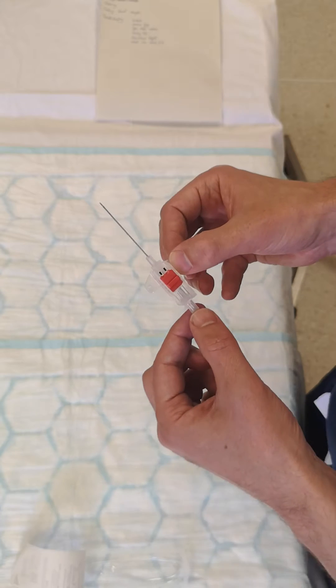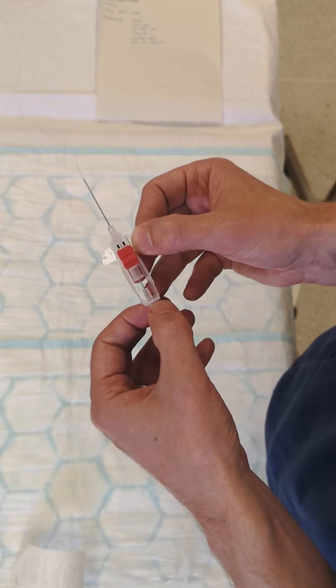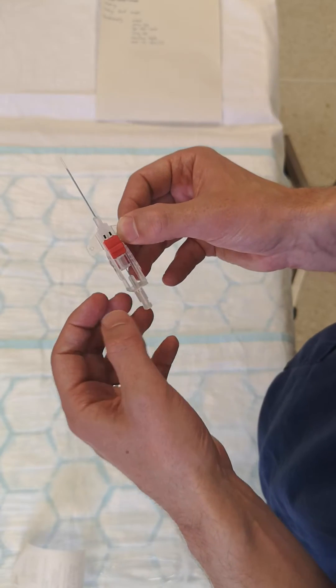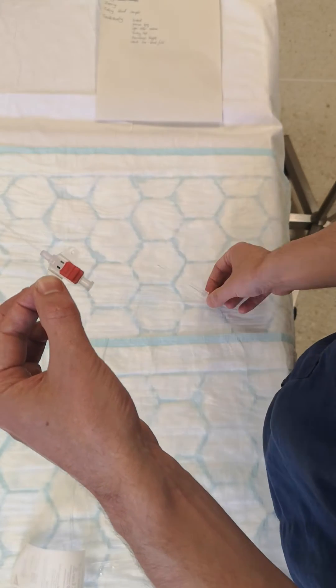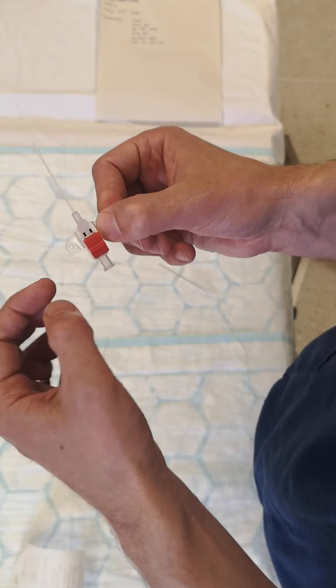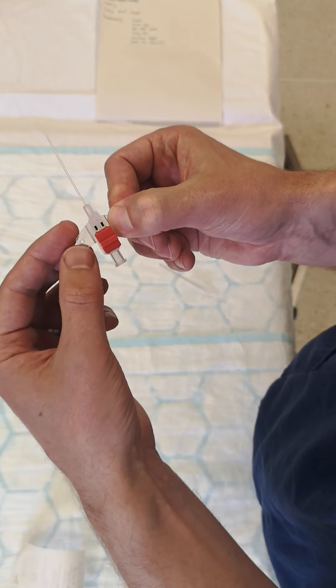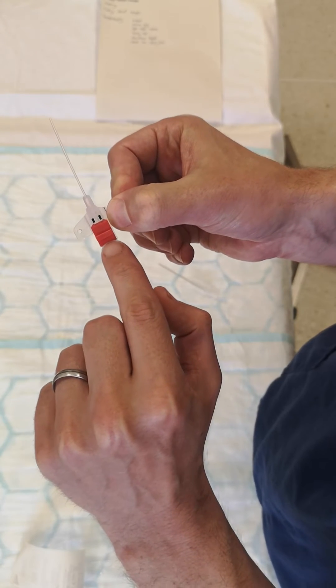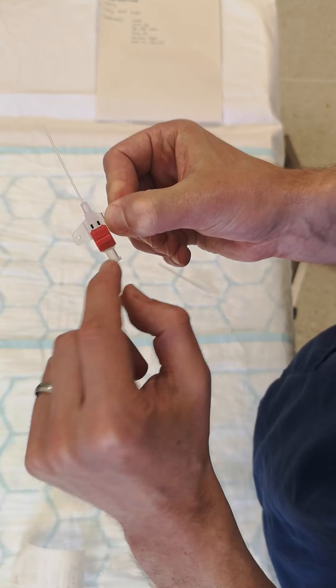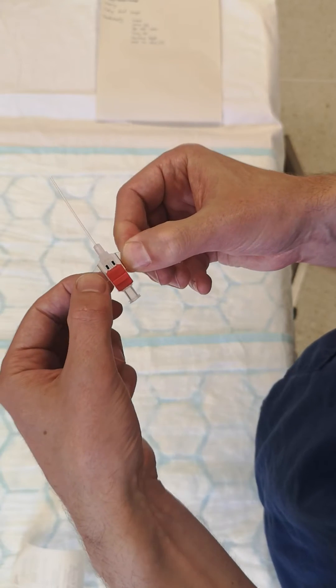The differences being to a peripheral cannula is the flow switch, so this red button here which will basically allow you to close and open the valve in there. So it comes as on, which is open.